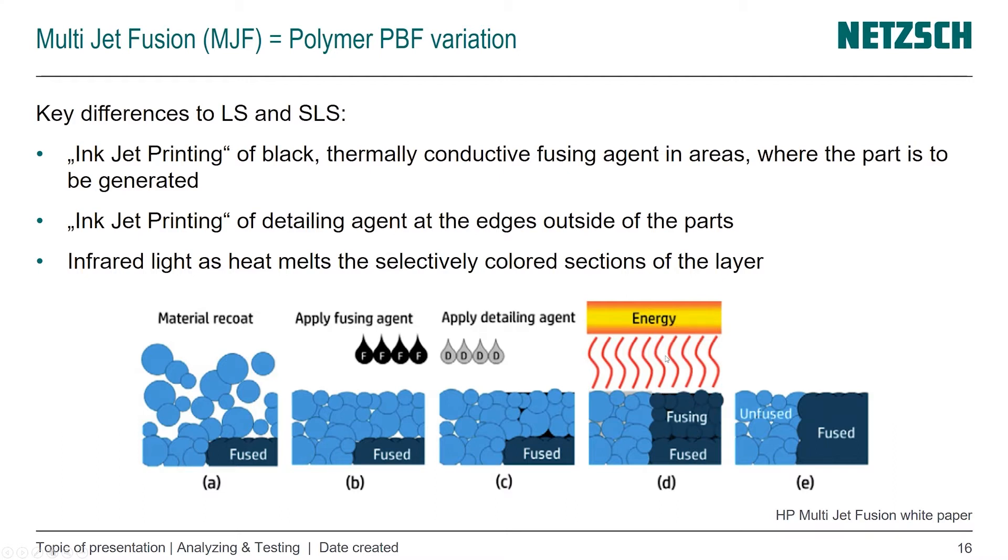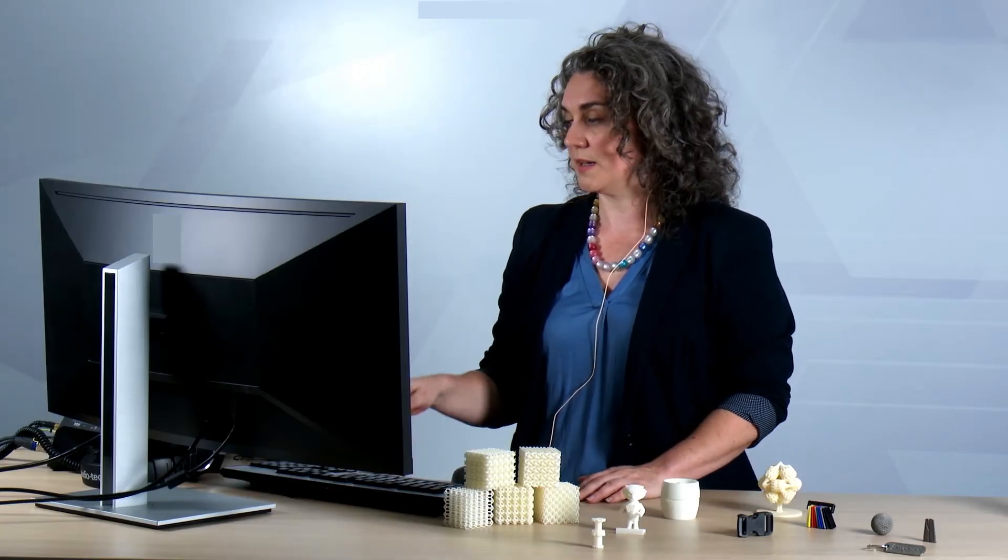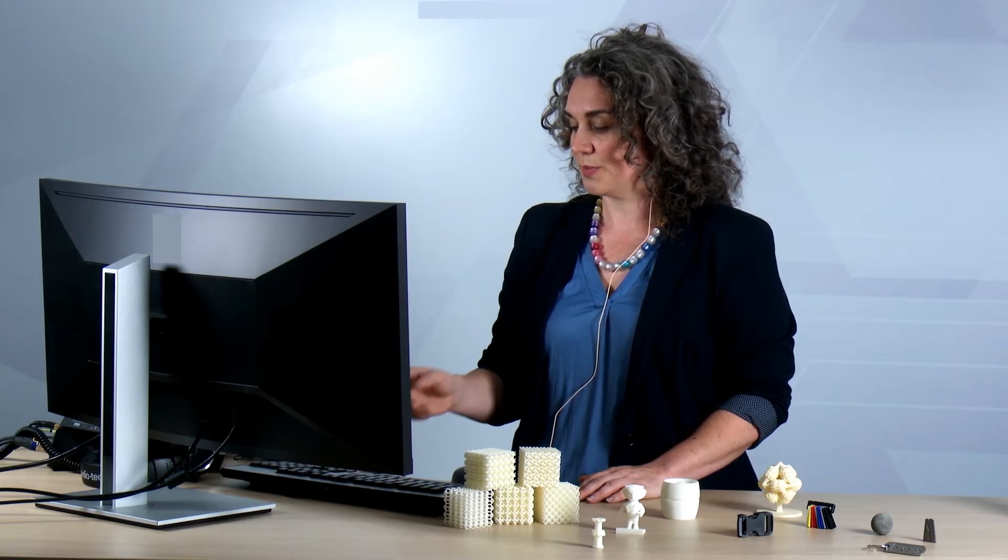Once infrared light comes in as our heat source, the black ink absorbs that energy and fuses the powder particles together where they're supposed to form the part. The detailing agent helps keep the other areas unfused, so you can get very good boundaries and distinction between the areas to be fused and the part cake.